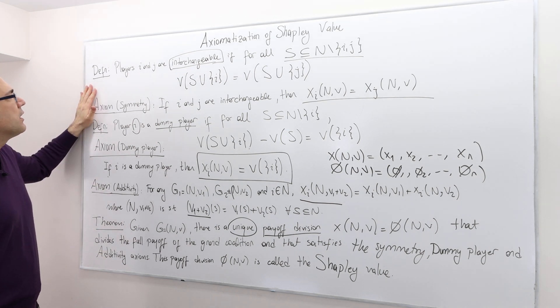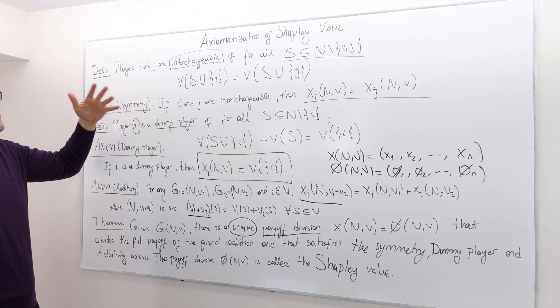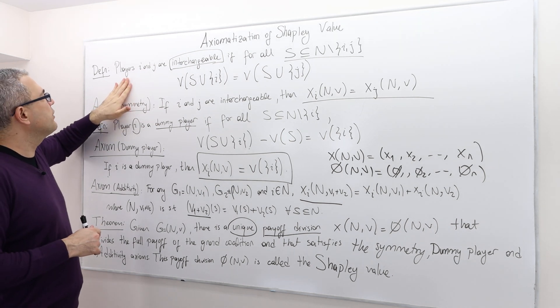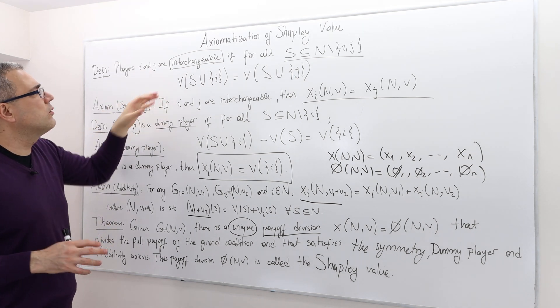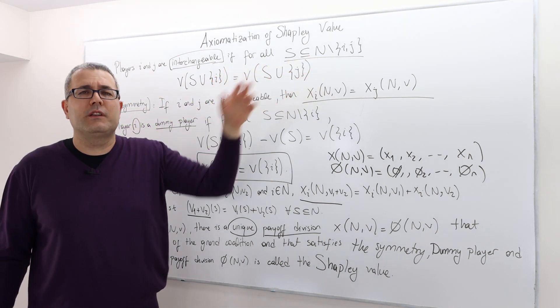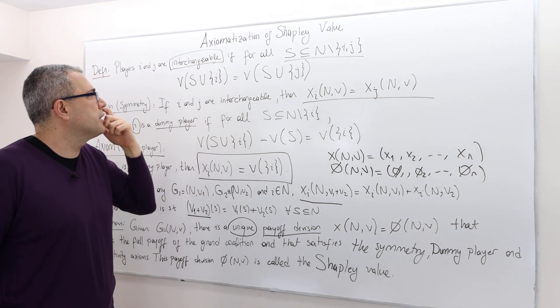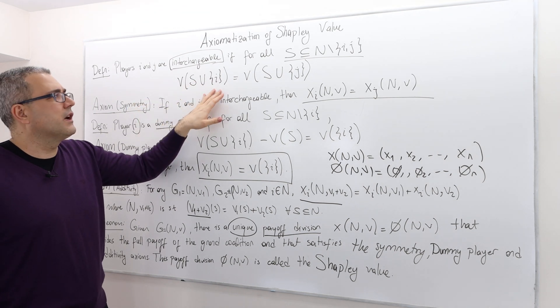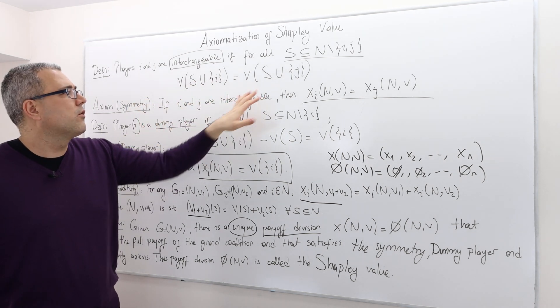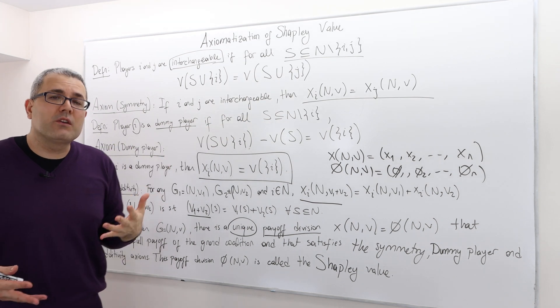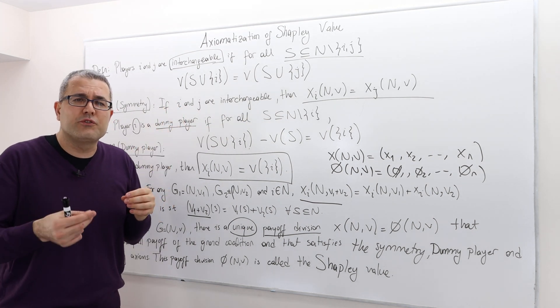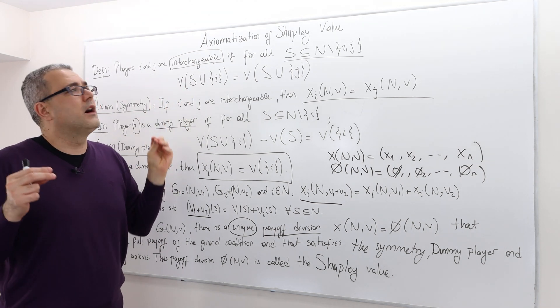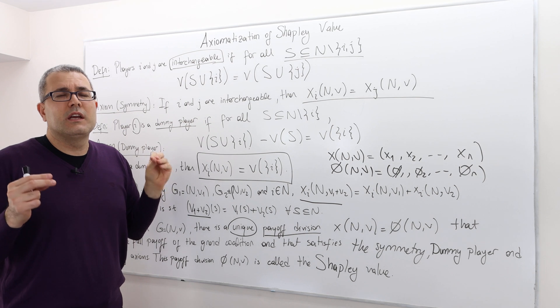So the first definition is the following. It's called interchangeability of players. So in any coalitional game, players i and j, two different players, are called interchangeable if for any coalition that excludes player i and j, the valuation, the worth of new coalition s union i is equal to the worth of the coalition s union j. So to speak, it says the marginal contribution of player i and player j to any coalition is the same.